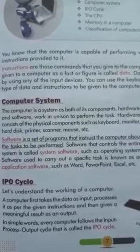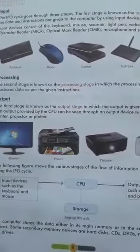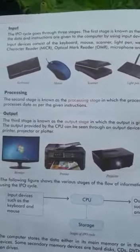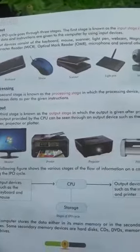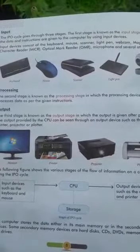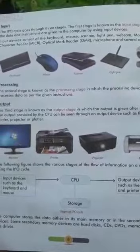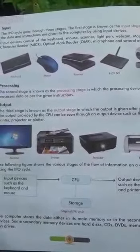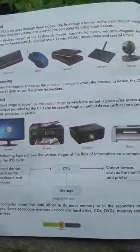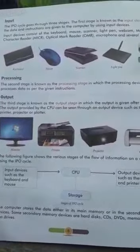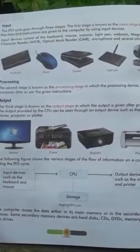The IPO cycle goes through three stages. The first stage is known as the input stage, in which data and instructions are given to the computer by using input devices. Input devices consist of the keyboard, mouse, scanner, light pen, and webcam.